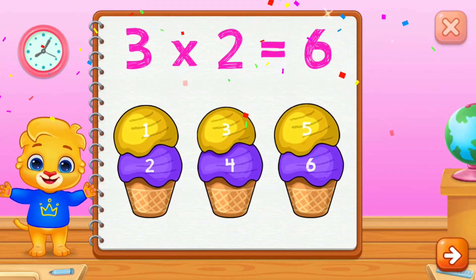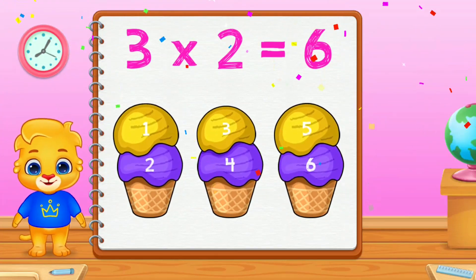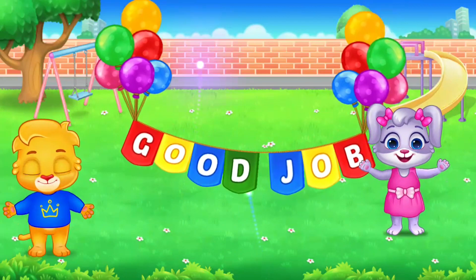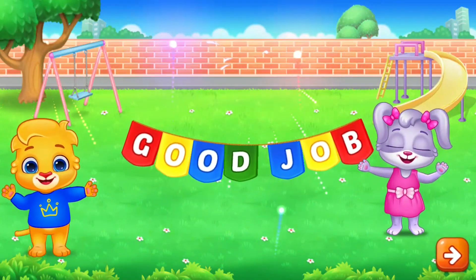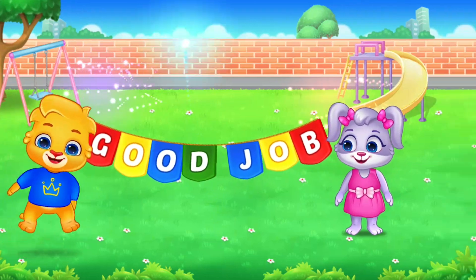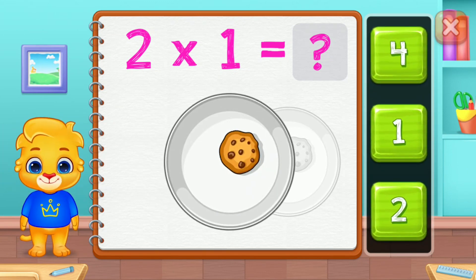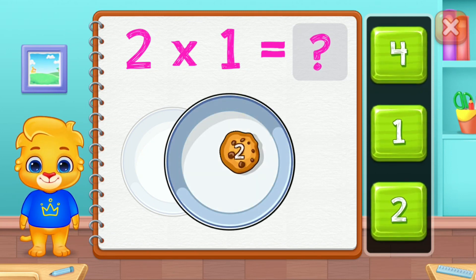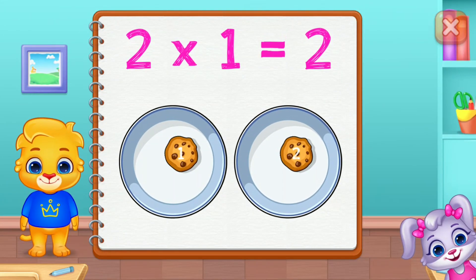One, two, three, four, five. Good job! One, two. Two groups of one equals two.